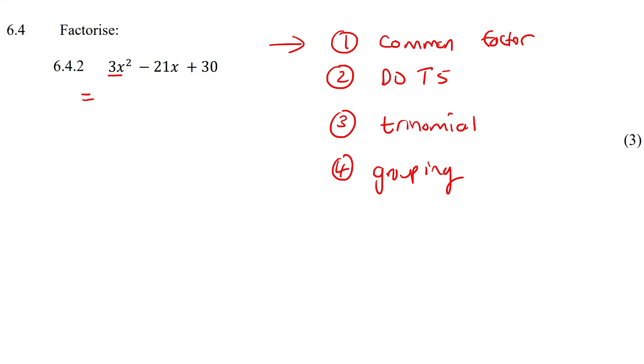So I take out the number three, and what would I have left? x² - 7x + 10. Why? Well if you had to imagine yourself putting it back, that would give you 3x², that would give you negative 21x, and that would give you 30. So everything looks good.